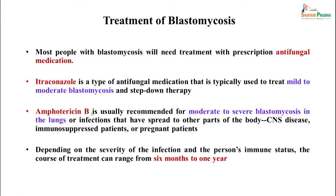Treatment of blastomycosis: most people need antifungal medication. Itraconazole is used for mild to moderate blastomycosis and as step-down therapy. Amphotericin B is recommended for moderate to severe blastomycosis, particularly with CNS involvement. Depending on severity and immune status, treatment duration ranges from 6 months to 1 year.